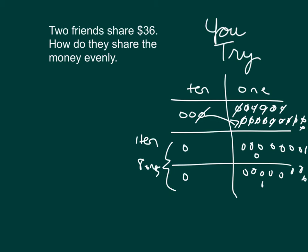Running a check. If we didn't run it yet, please take a moment to do so. Does 18 times 2 equal 36? 2 times 8 is 16, that's 6, regroup of 1. 2 times 1 is 2, plus 1 is 3. So, $18 times 2 does give us $36, which was the amount that we were sharing.